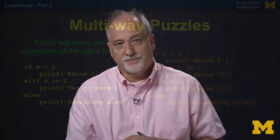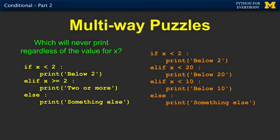So here are a couple of puzzles. I'll give you a second to pause this. And the question is to look at some of these, depending on for a particular value of x, which will never happen for some particular value of x? So I'll pause for a second and let you pause the video if you want, and then I'll come back and explain it to you.